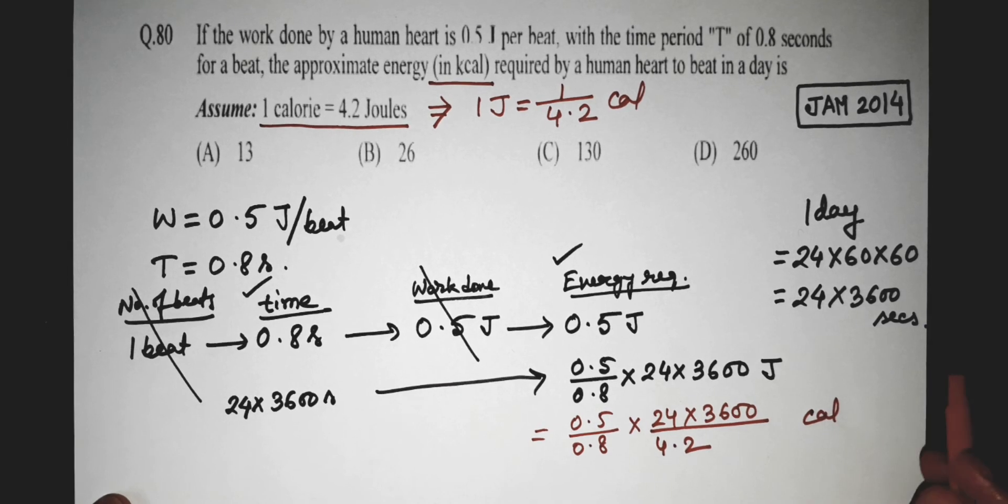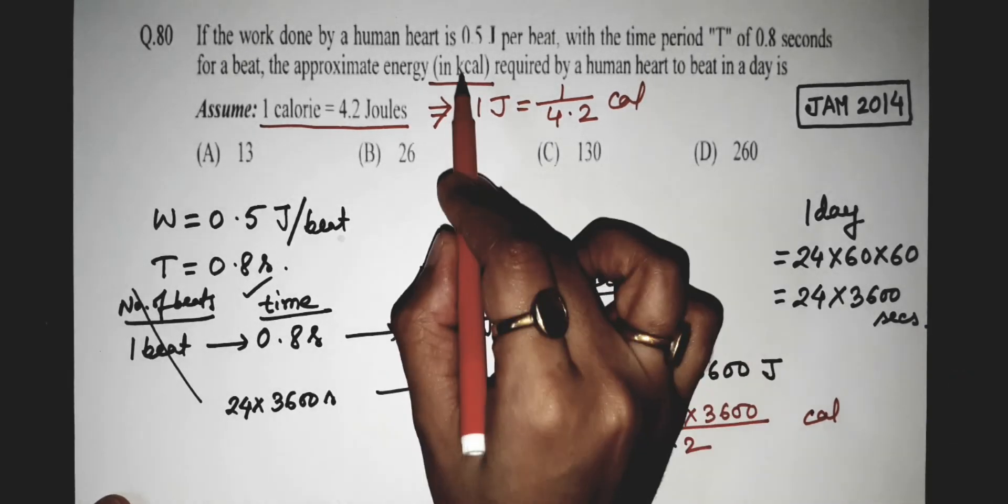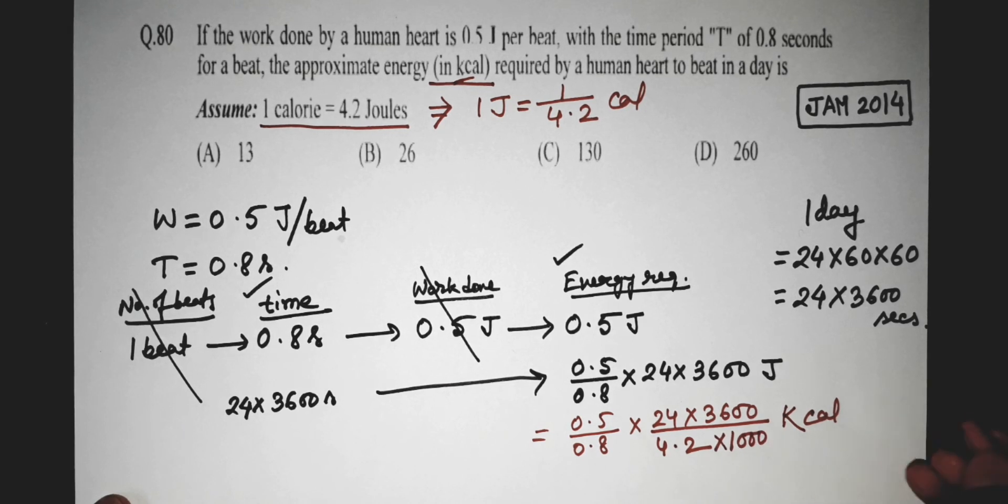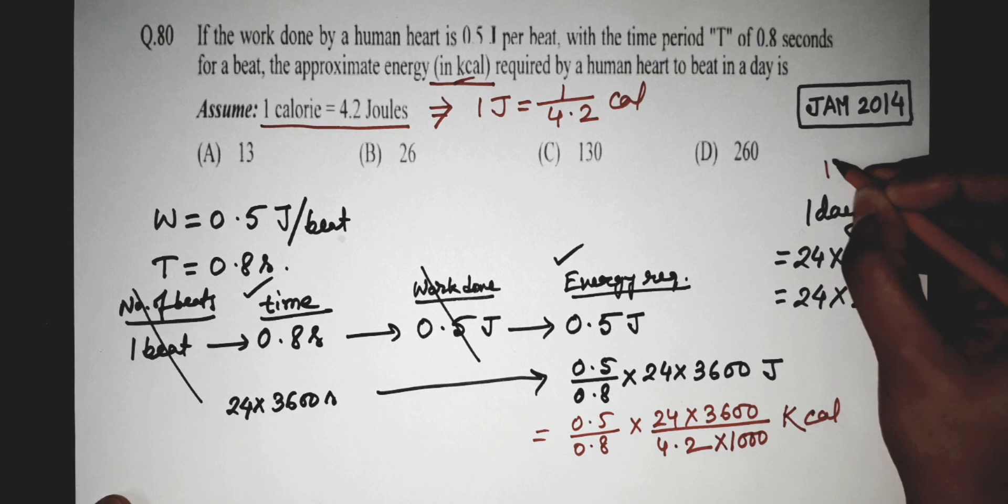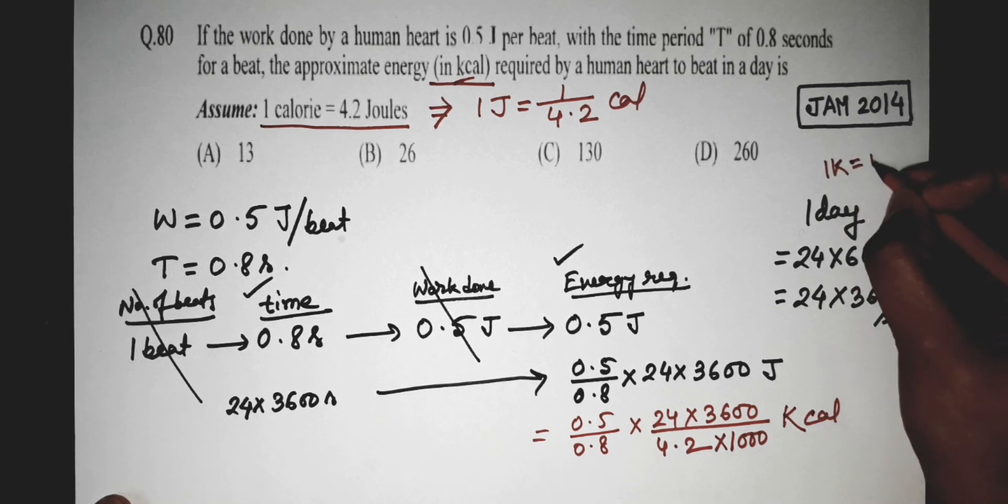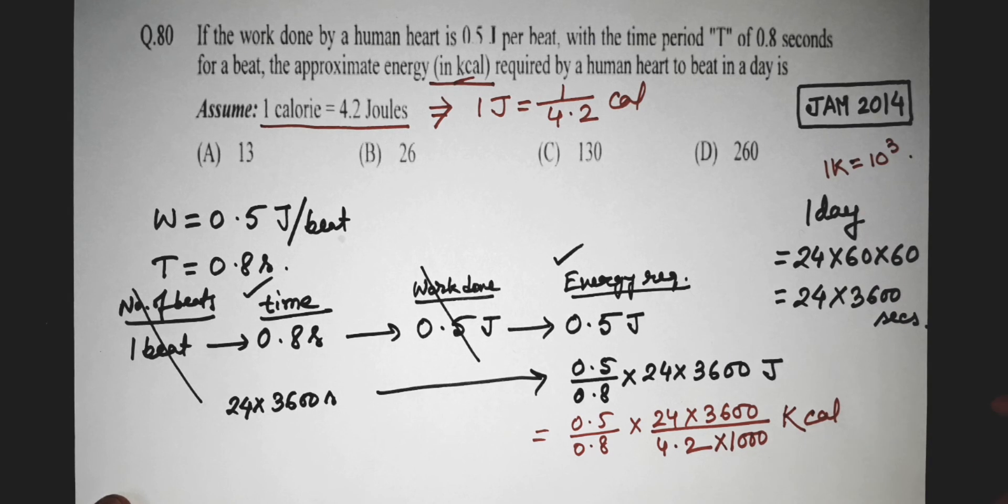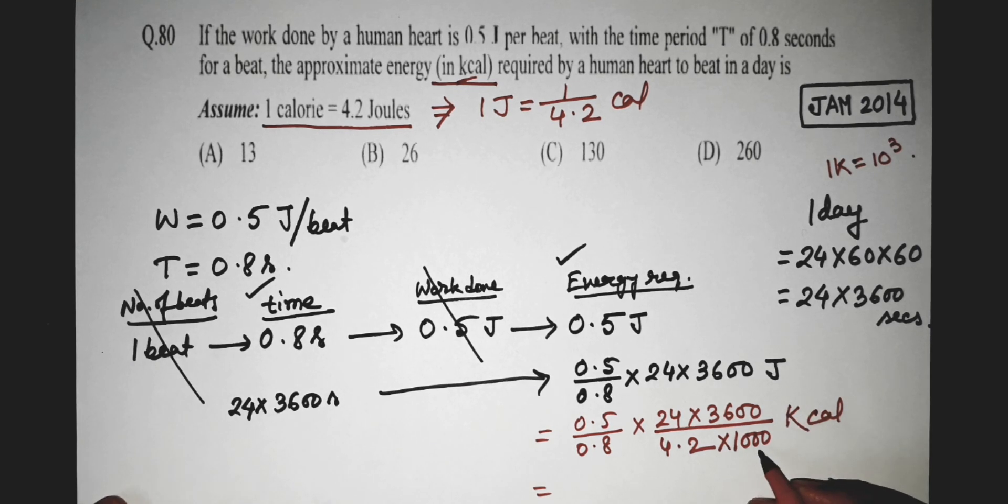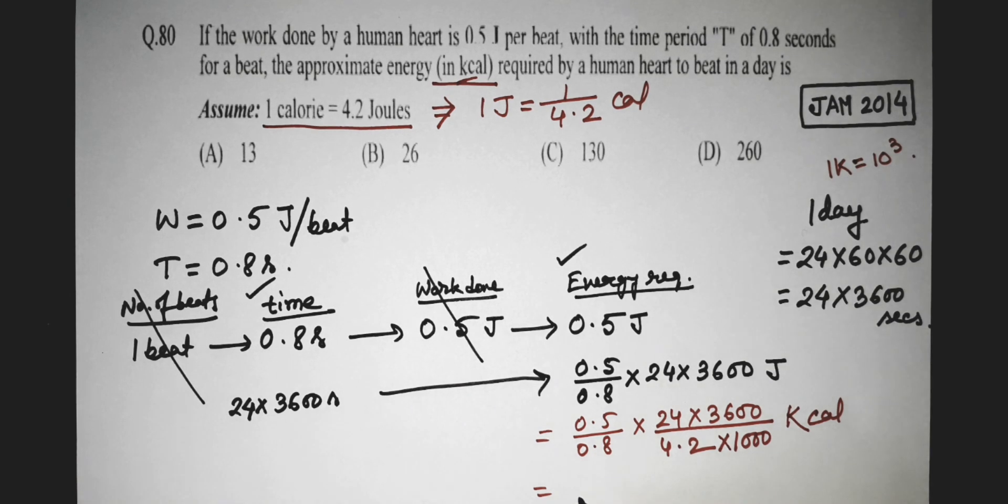Now the answer is required in kilocalorie. So to get the answer in kilocalorie, we have to divide it by 1000. Because we know 1 kilo equals 10 cube. So if we multiply here 10 cube, that is 1000, we have to divide here by 1000. And the answer becomes 12.86 kilocalorie.